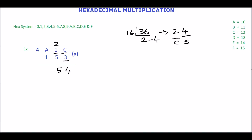Then multiply 3 by A. A is equivalent of 10, so 3 multiplied by 10 is 30. 30 is not a hex number, so divide 30 by 16. The quotient is 1 and the remainder is 14. 14 is equivalent of E, so the equivalent hexadecimal number is 1E. In this, E is the sum and 1 is the carry. Write E here and carry 1 over the next digit.